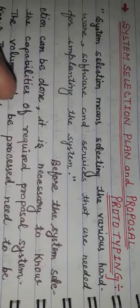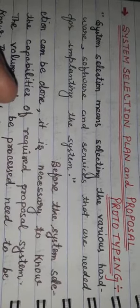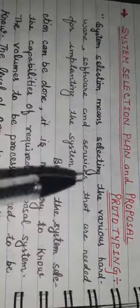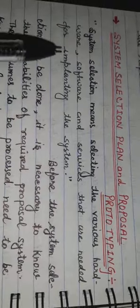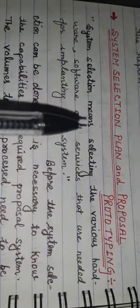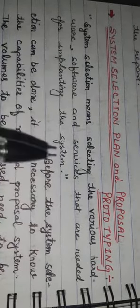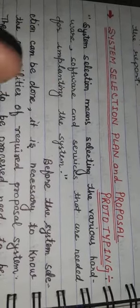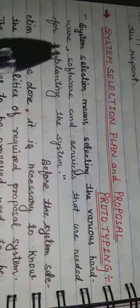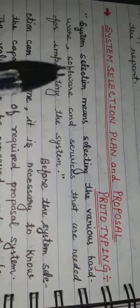Let's learn about the system selection plan — what it is. System selection means selecting the various hardware, software, and services that are needed for implementing the system. In other words, selecting the hardware, software, or services that are necessary for building a system is called system selection.